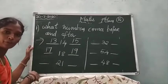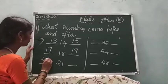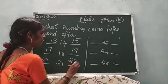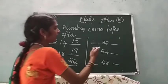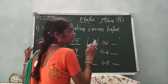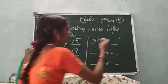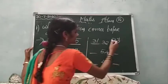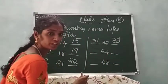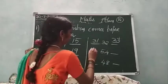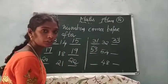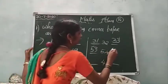21 before the number — 20. 21 after the number — 22. And 32 before the number — 31. 32 after the number — 33. 54 before the number — which number? 53. 53 after 54. 54 after the number — 55.